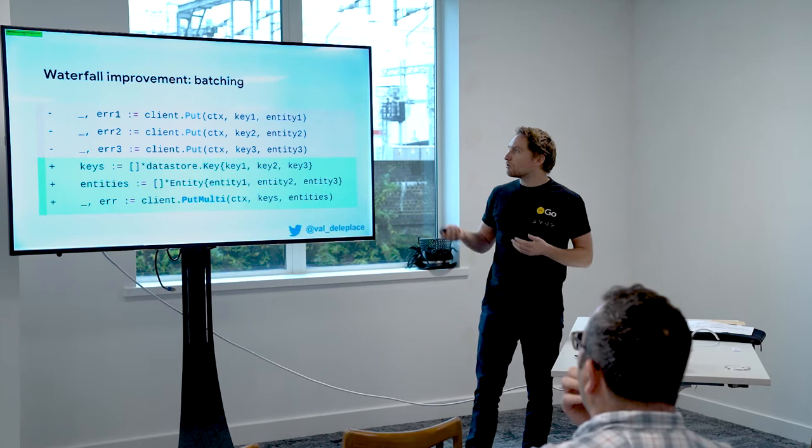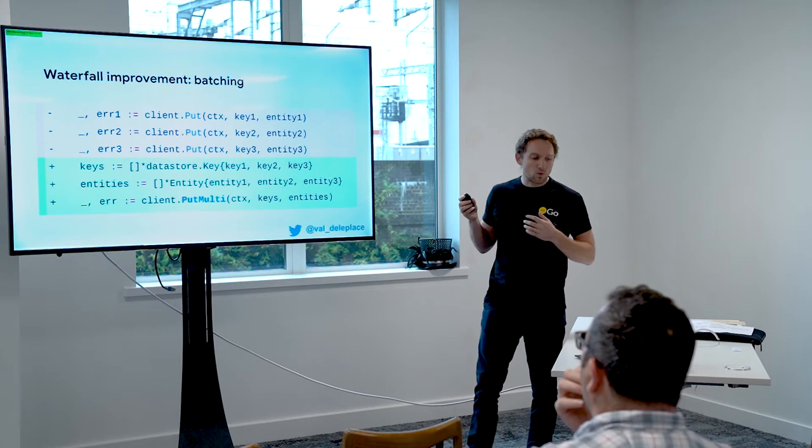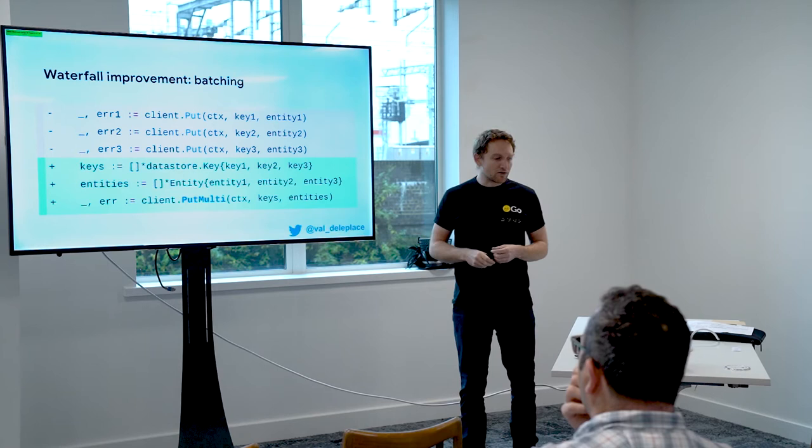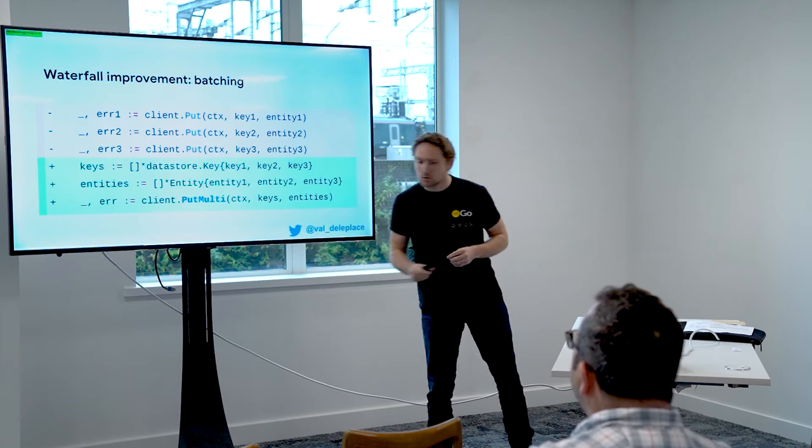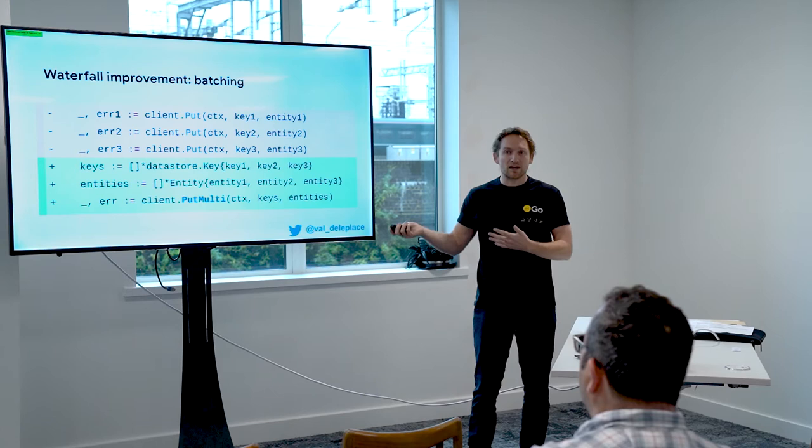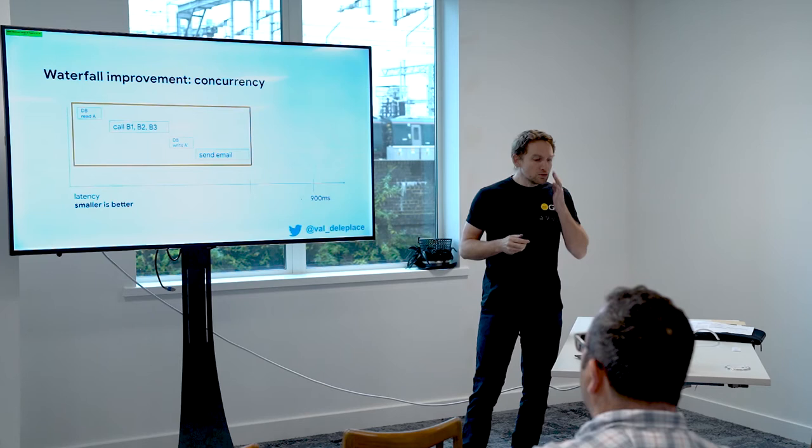This is what batching can look like when using a Go client library. Instead of three sequential calls storing each one key-entity pair, we prepare a slice of keys and a slice of entities and then make one single API call to the batch function PutMulti. The code change is not very complex — we just need to know that it happens to make things faster.